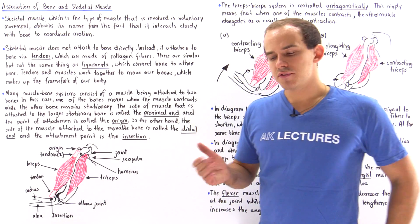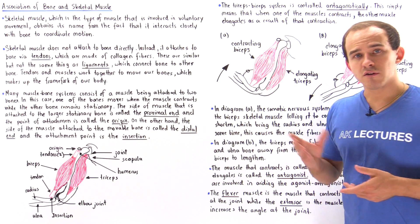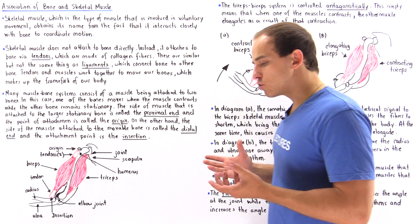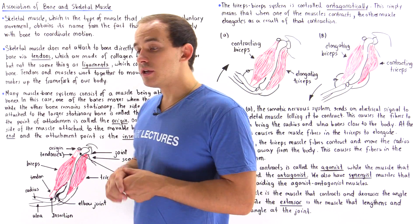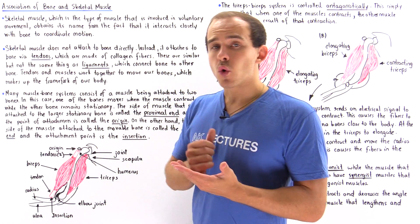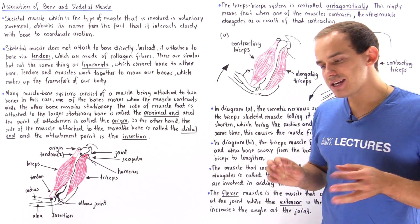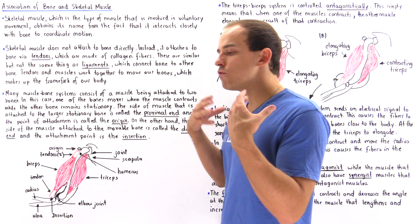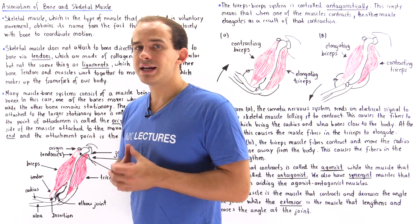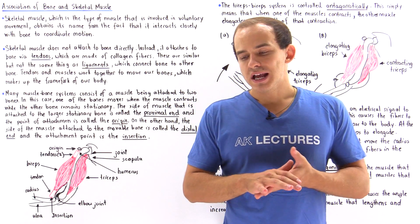The skeletal system of the human body, which consists of bone and cartilage, is a very important component because it doesn't only protect our organs, store important minerals, and create blood cells, but it also creates an overall framework of our body that allows us to actually move.